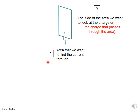The first thing you need to do when you want to talk about current is define what area we're talking about — you need to define an area in space. The second thing is to choose a side of the area to look at what's happening to the charge on that side. You can choose the right side or the left side, and this is a very subtle point because whether the current is positive or negative depends on this choice.